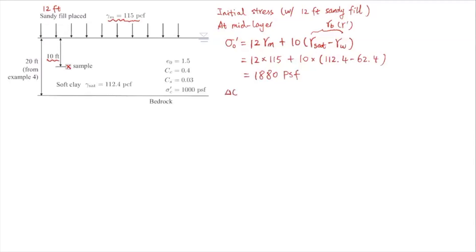Then the change in effective stress, Δσ', is negative 12 times 115. So that's basically the stress change if you remove that 12 feet of sandy fill. We use negative here to indicate that we're removing this. So it's 1380 PSF, pound per square foot. Then the final effective stress, σ'f, is basically σ'₀ plus the change. And this is 1880 minus 1380, which is 500 PSF.